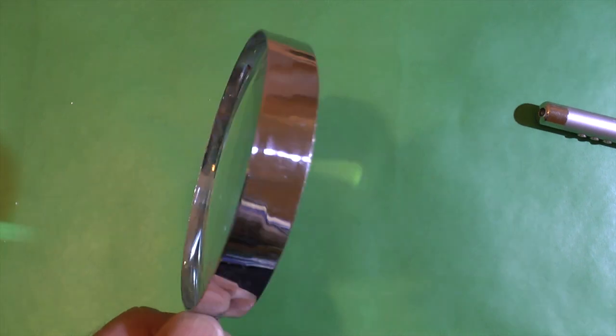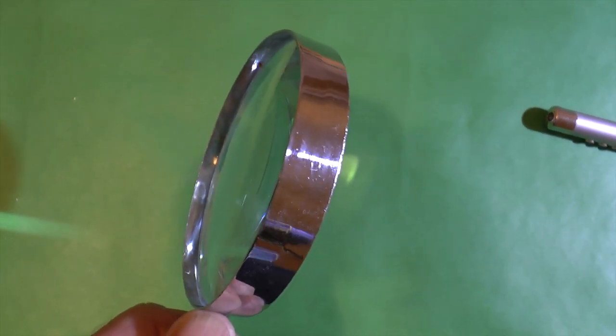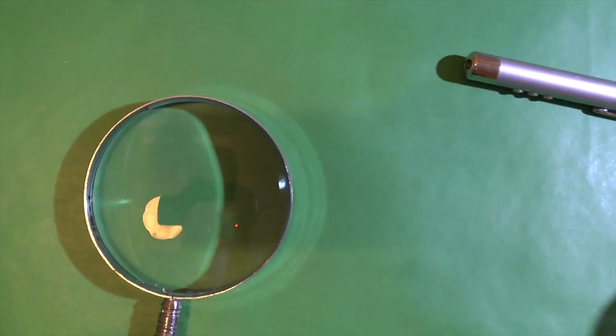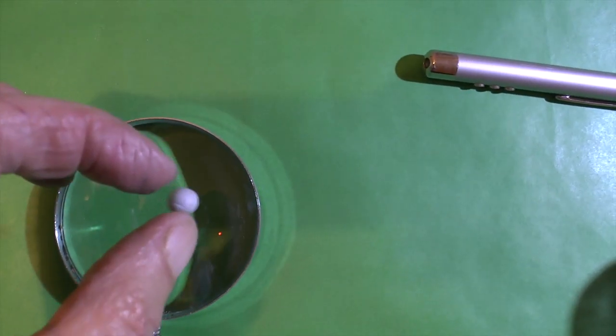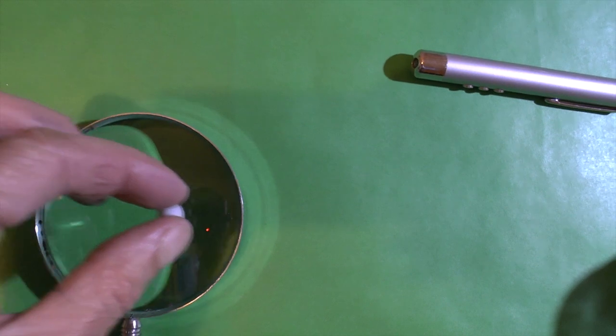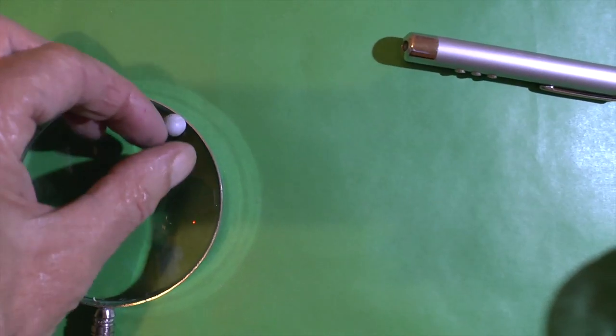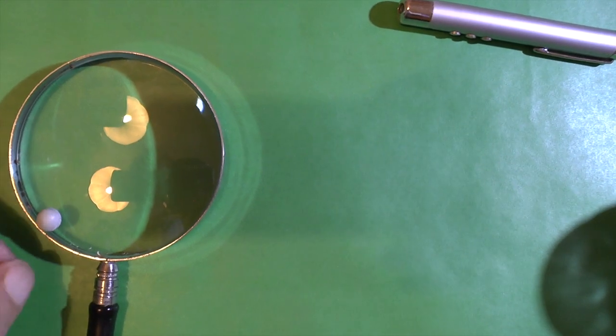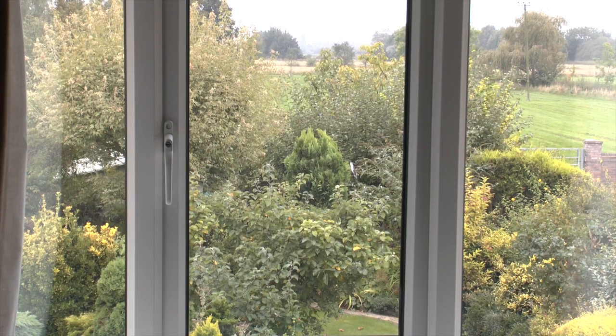The glass of a convex lens bulges outwards in the middle. It is thick at the centre and thin at the edges. It is called a convex lens but very often it is called a converging lens because that is what it does to the light. It converges the light.